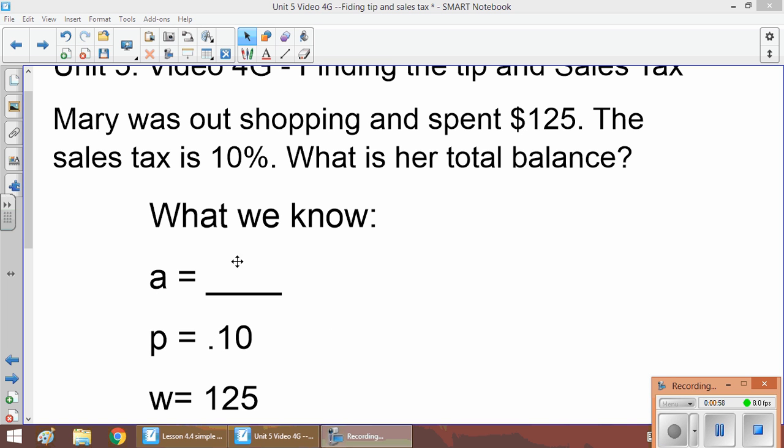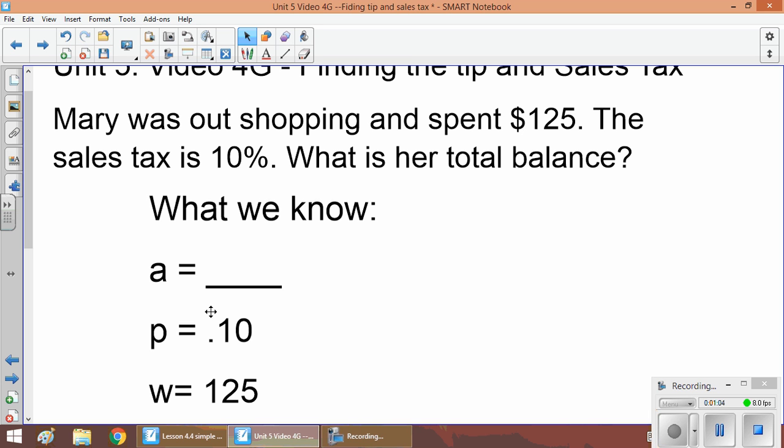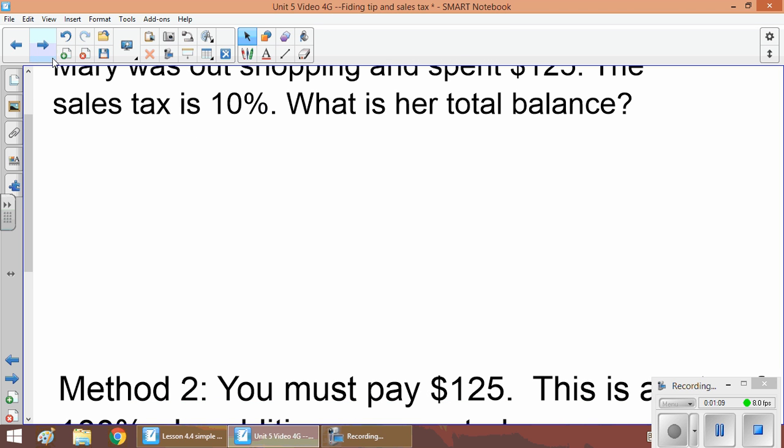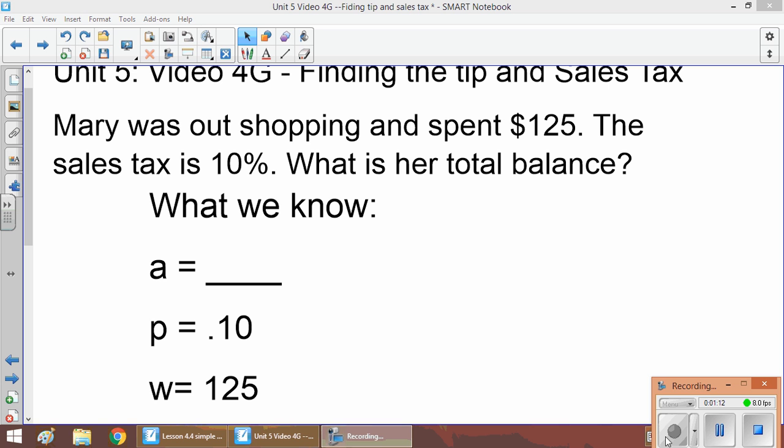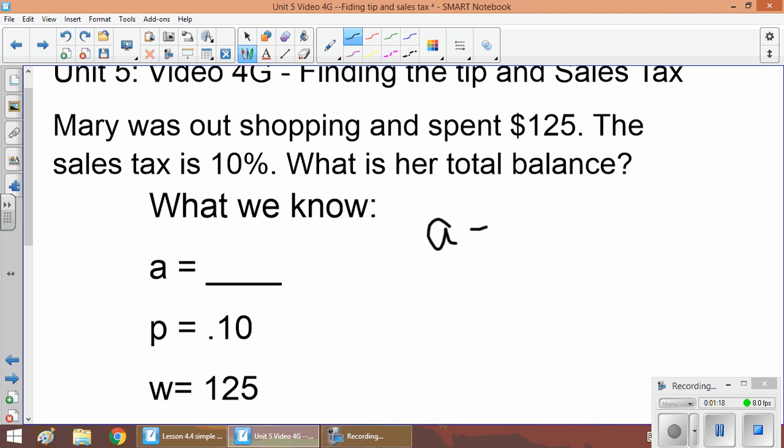So what 'a' is going to represent is the amount of sales tax that we need to add on. So what we're going to do here is take our formula a = p × w and substitute a = 0.10 × 125. And that means a is equal to, if you put this into your calculator and multiply, we get 12.5, which is the same as $12.50.